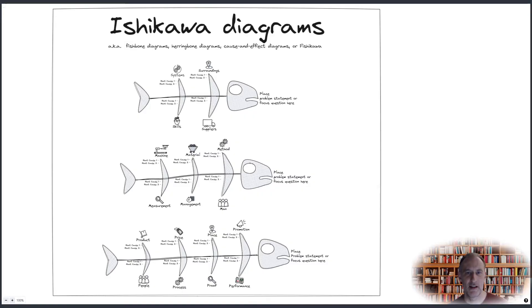Identify the effect. Place this to the head of the fish. Identify the category names. There are many domain specific models available, but you can also develop your own categories. Use a round robin to suggest possible causes. Discuss the suggested causes. Privately rank the causes.